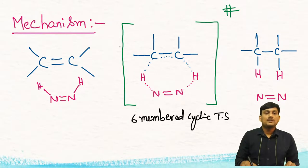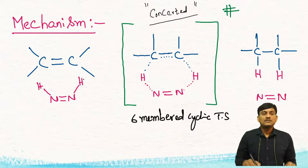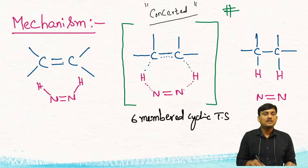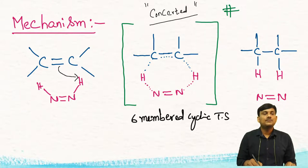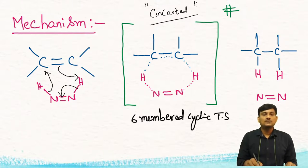Mechanism: in this mechanism there is only a single step, so it is a concerted mechanism. There is a formation of bonds and breaking of bonds taking place simultaneously. When you treat C=C with diazene, there is a movement of pi electrons of C=C towards the hydrogen of diazene, and these electrons move in between the two nitrogens and towards carbon. There is a cyclic movement of bond electrons.